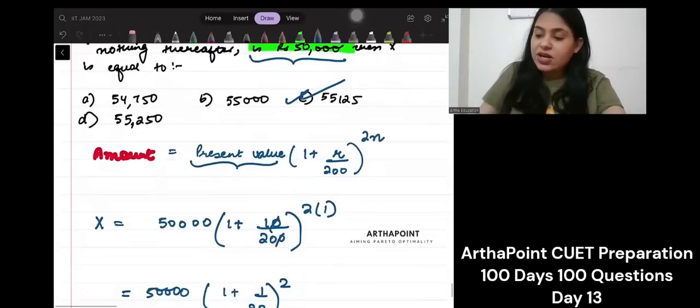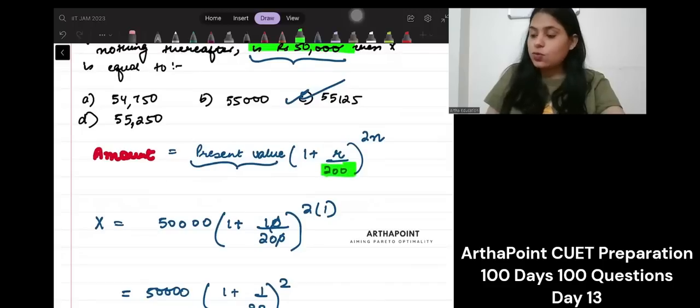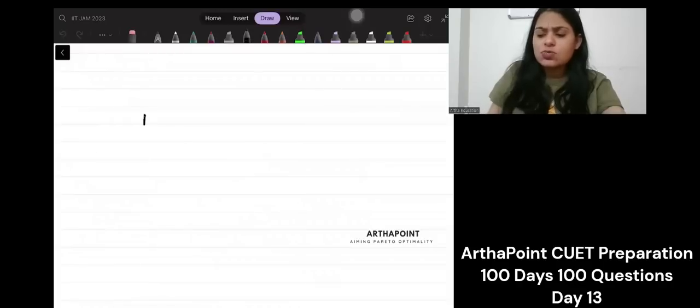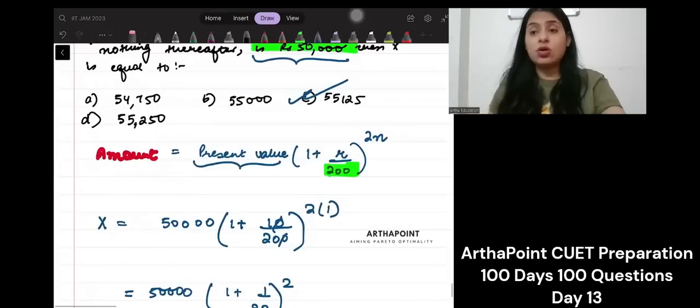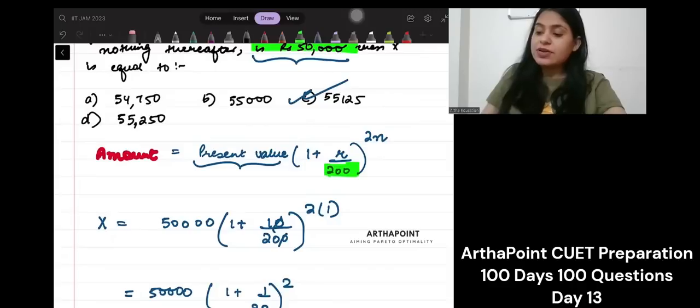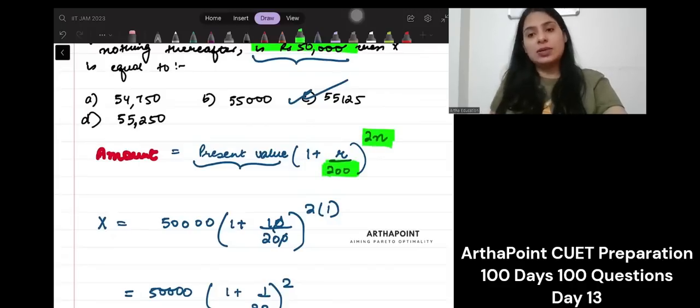So, when it is half yearly, you will divide it by 2. R will be divided by 2. But, we were doing that to the power T, right? Our formula used to be P 1 plus R by 100 to the power T. Instead of T, you will multiply time also by 2, right? So, it will be 2N. So, you will divide here by 2 and you will multiply here by 2 and you will get the answer.